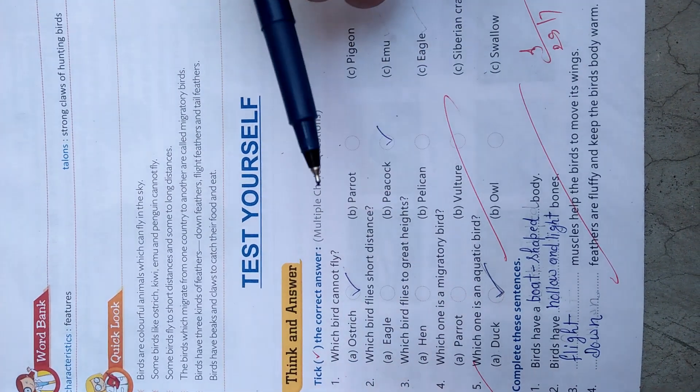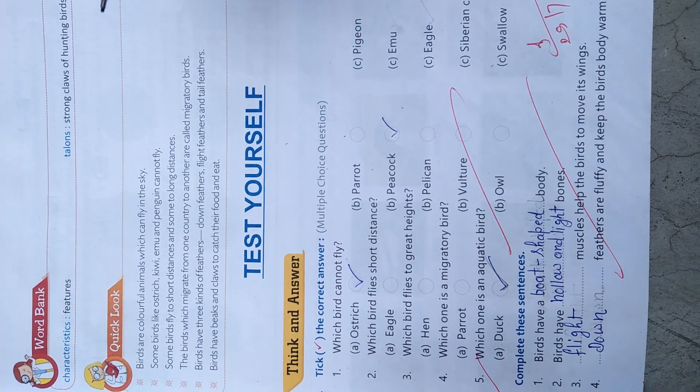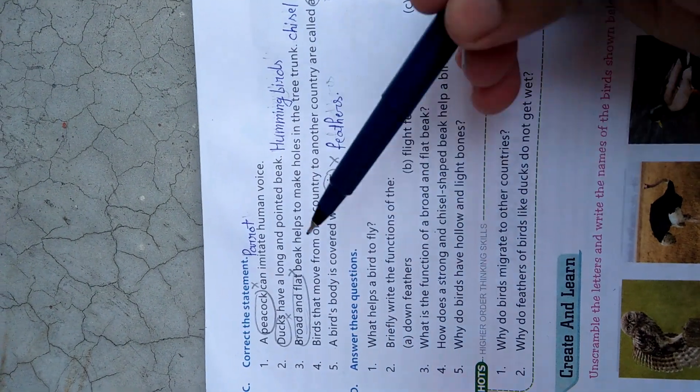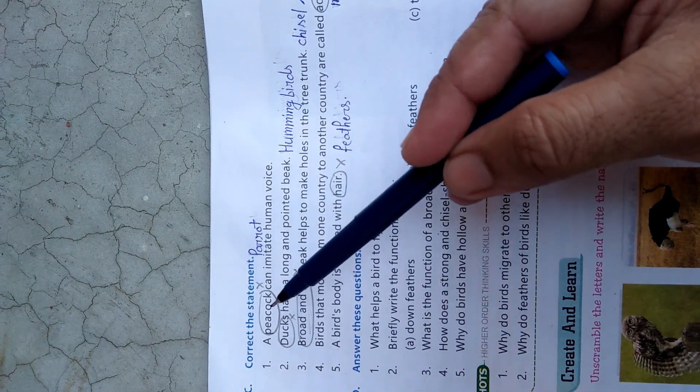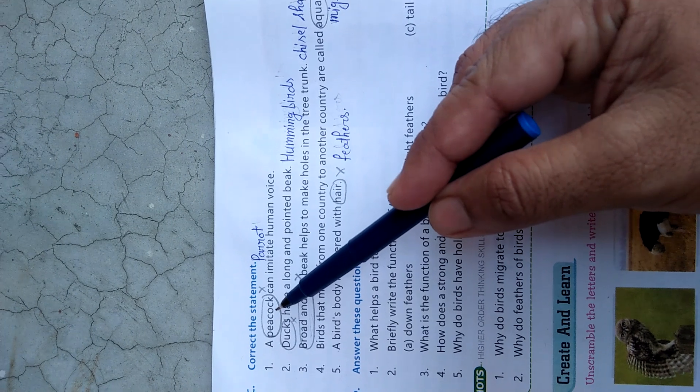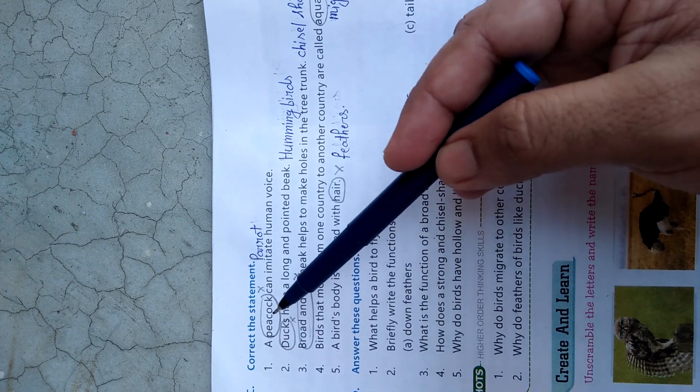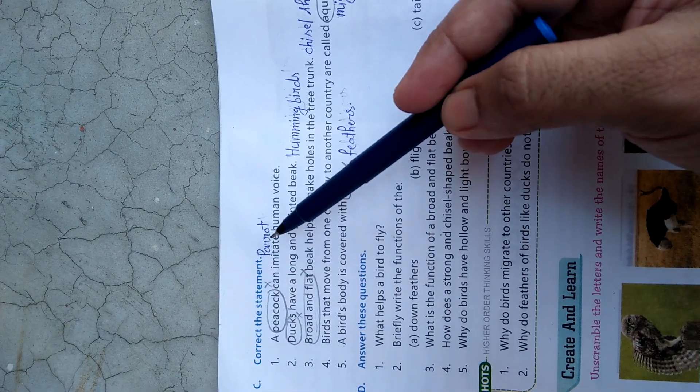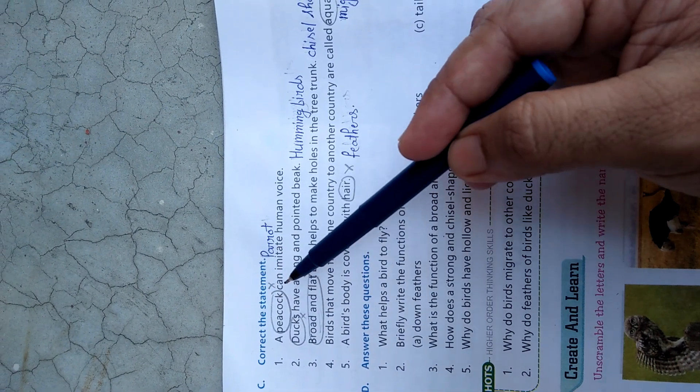Third: flight muscles help the bird to move its wings — f-l-i-g-h-t. Fourth: down feathers — d-o-w-n. Down feathers are fluffy and keep the bird's body warm.